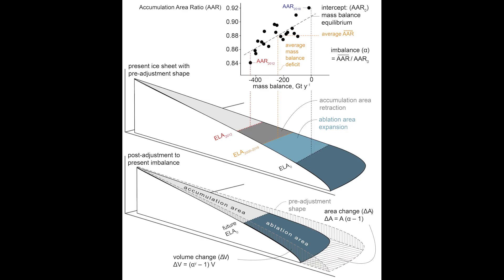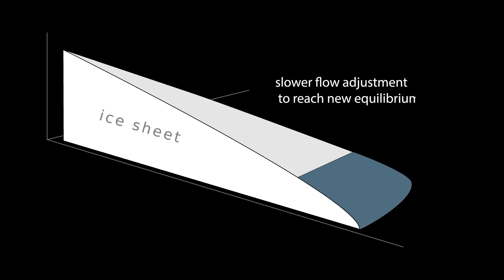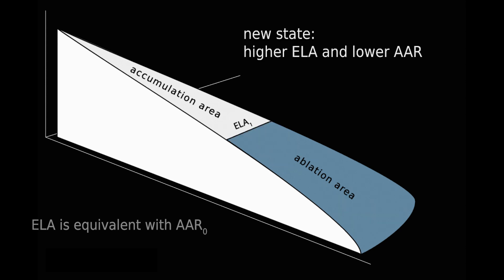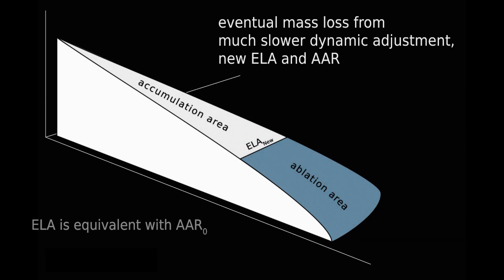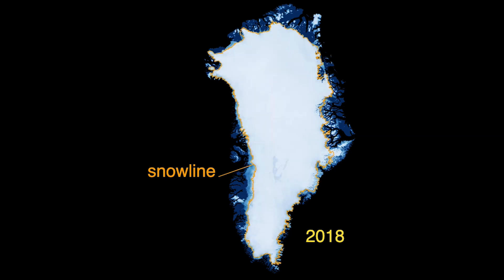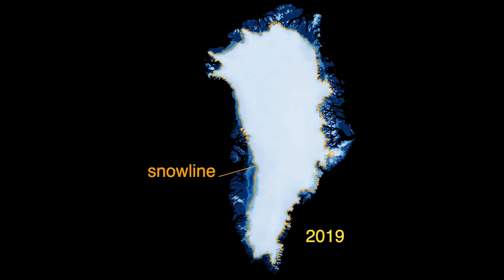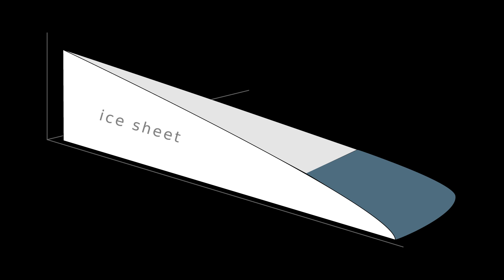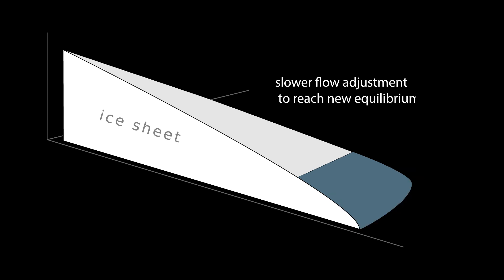Now here's the elegant part. The ratio of the average AAR to the equilibrium AAR directly quantifies the area change required for the ice flow to reshape this ice mass for it to be in equilibrium with this new climate. If climate stayed constant at this recent average, the ice sheet would equilibrate its shape through its flow to this new climate state. The power of this disequilibrium approach lies in how surface climate perturbations that express themselves as AAR fluctuations are effectively instantaneous compared to the time it takes for the ice to flow into and reach a new configuration in balance with this new climate state.